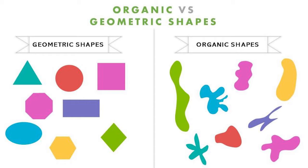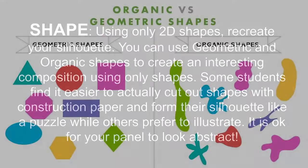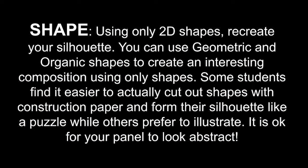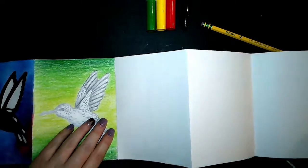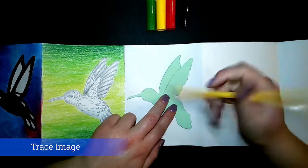The most important thing for you to know about shapes is that they are flat and only two-dimensional. Using only 2D shapes, recreate your silhouette. You can use geometric and organic shapes to create an interesting composition using only shapes. Some students find it easier to actually cut out shapes with construction paper and form their silhouette like a puzzle while others prefer to illustrate it. It is okay for your panel to look abstract.